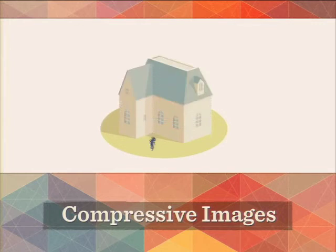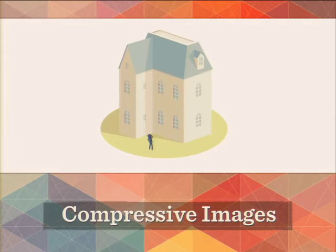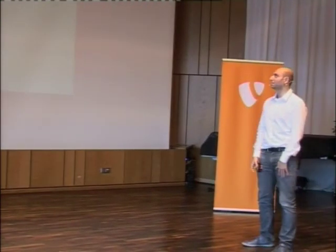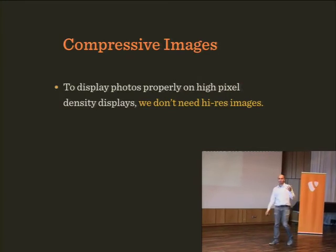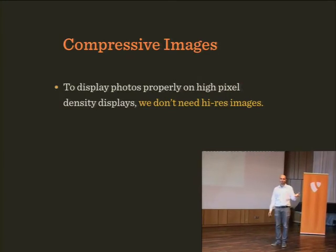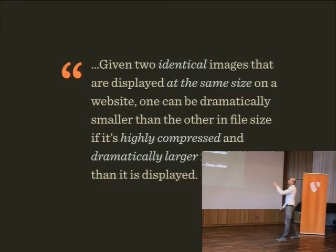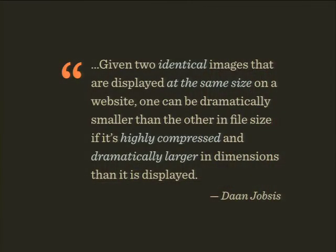The whole thing with responsive illustrations and icons is essentially solved. Photos — not so much. In order to display photos properly on high pixel density displays, we don't really need high-resolution images. Given two identical images displayed at the same size, one can be dramatically smaller in file size if it's highly compressed and larger in dimension than displayed. A 600×400 image at worst JPEG quality is 7K; if you reduce it to display at 300×200, most people won't notice a difference compared to a natively 300×200 image at 21K.